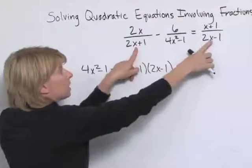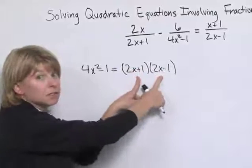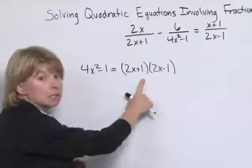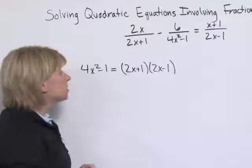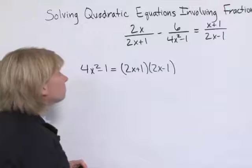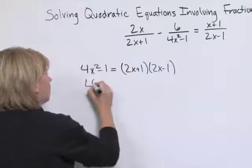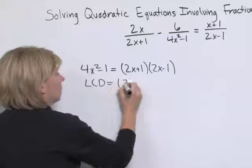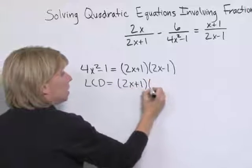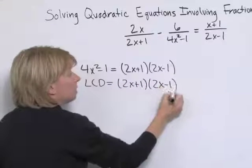And notice our other two denominators are exactly those two factors. So our LCD is 2x plus 1 times 2x minus 1. And this is what I will multiply both sides of the equation by.